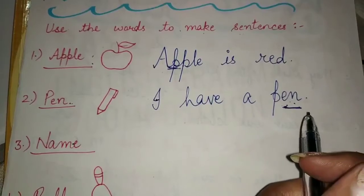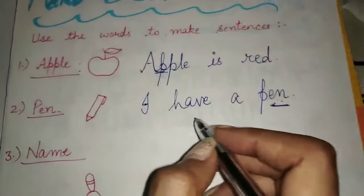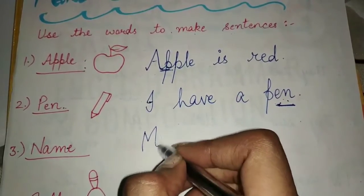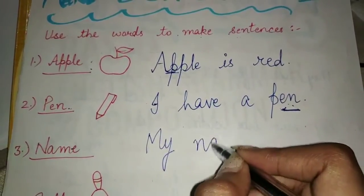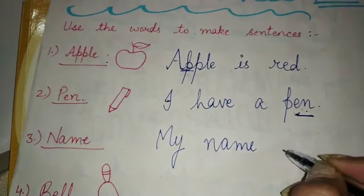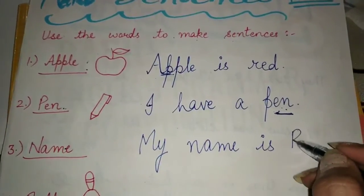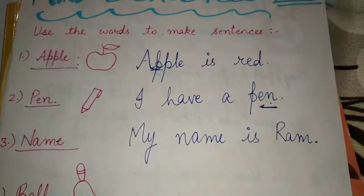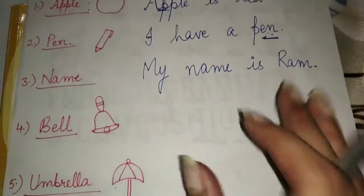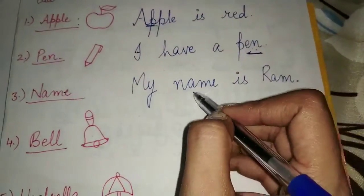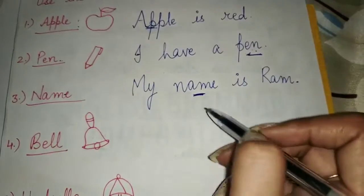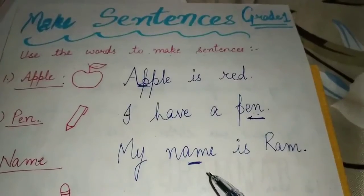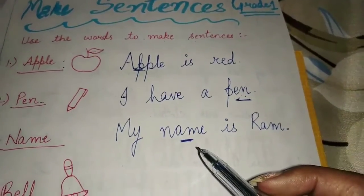The third word is Name. You can write: My friend's name is..., My mother's name is..., Father's name is..., or My name is Ram. We have made a line with the name word — that's sentence formation.